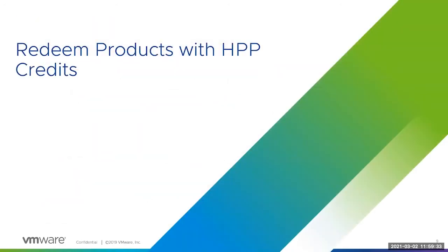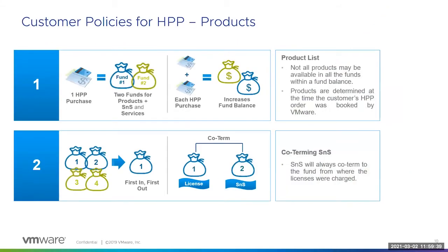How do you redeem HPP credits toward the purchase of licenses? Let's review the customer policies for HPP products. The purchase of one HPP credit results in two funds being made available to the customer: one fund for products and related SNS, another fund for services. With each HPP purchase, the fund balance is increased. Not all products may be available in all funds within a fund balance. Products are determined at the time when the customer's HPP order is booked by VMware. A first-in, first-out policy applies to the usage of funds. And remember, SNS will always co-term to the fund from which the licenses were charged.